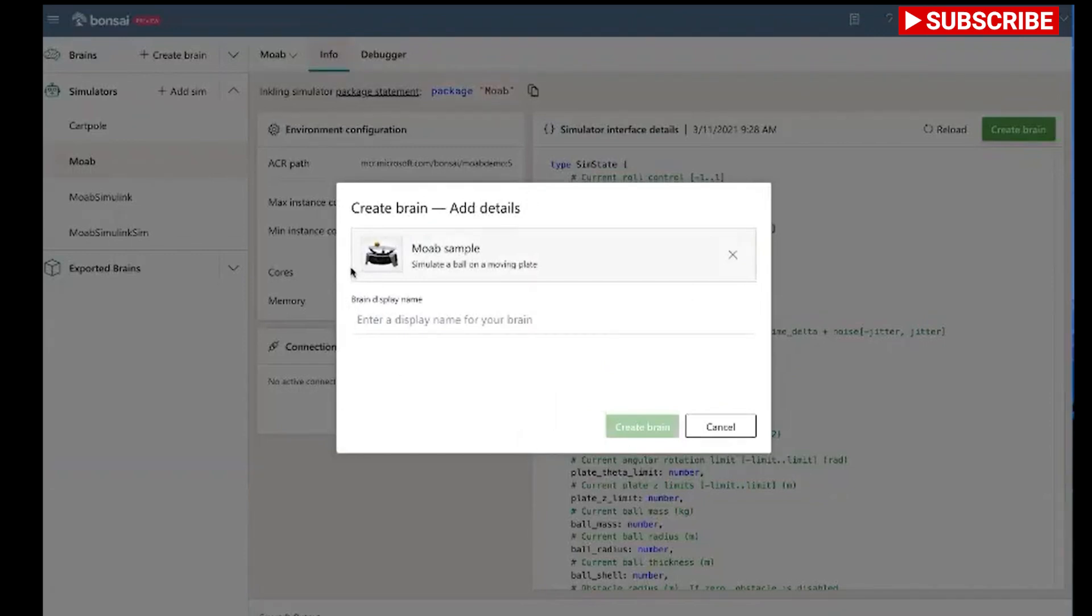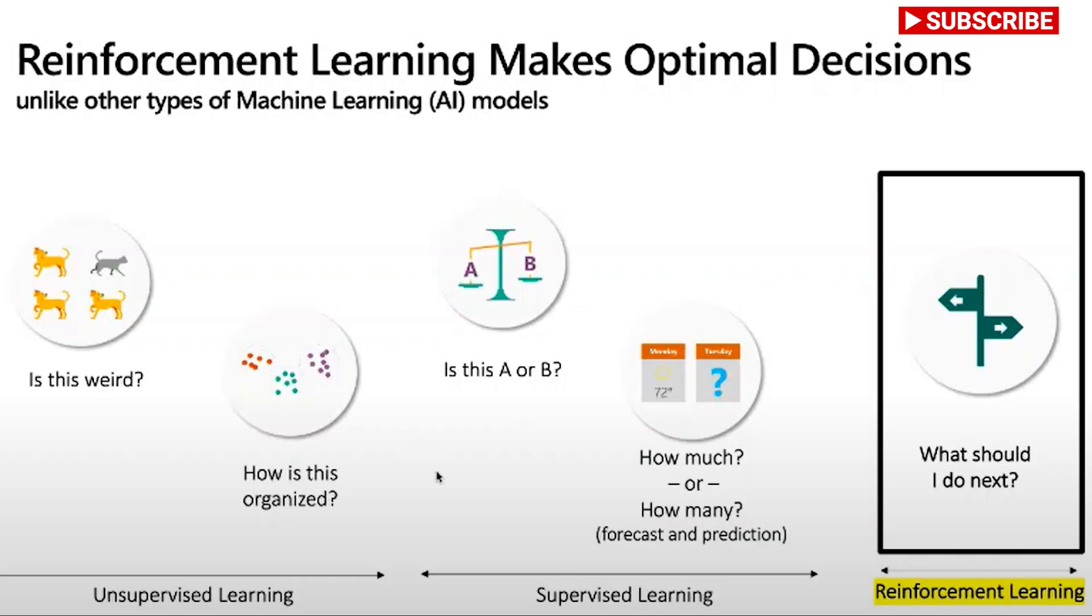Let's talk about what differentiates Bonsai, a Bonsai brain, and deep reinforcement learning from other AI strategies. Let's take a very high-level view of the machine learning models that are most common. We can separate it into three basic categories. You have your unsupervised learning which is really good for looking at your data and saying is something weird or how is this data organized. We then have supervised learning which is good for saying is this A or B, or it's good at making predictions like predicting the weather.